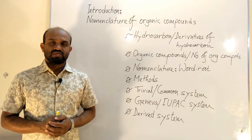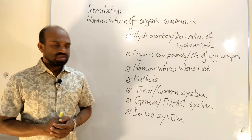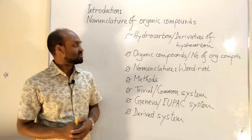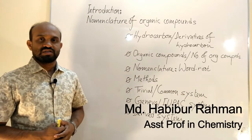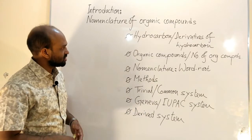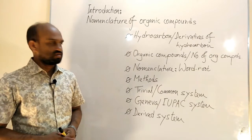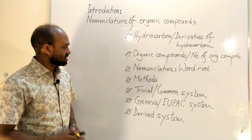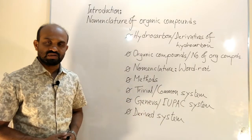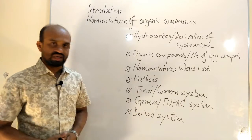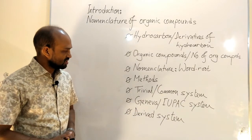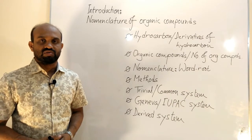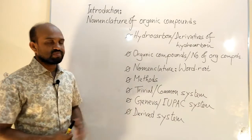From this lecture, we will try to learn these points: hydrocarbons and derivatives of hydrocarbons, organic compounds and their number, nomenclature, methods by which organic compounds are named, trivial or common system, Geneva or IUPAC system, and finally derived system. Let's try to learn all the points one by one.